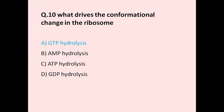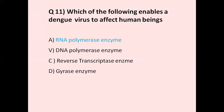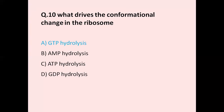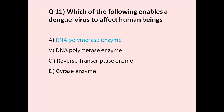Question number 10: What drives the conformational change in ribosome? Option A GTP hydrolysis, option B AMP hydrolysis, option C ATP hydrolysis, option D GDP hydrolysis. The correct answer is GTP hydrolysis, means guanosine triphosphate hydrolysis.